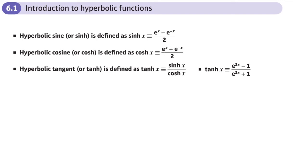This is the first section of chapter 6 in the Call 2 book on hyperbolic functions — an introduction to the hyperbolic functions. The hyperbolic functions are related to the normal functions for sine, cos, and tan. Some of the identities and rules that we have for sine, cos, and tan can also be used for these hyperbolic functions. We have hyperbolic function buttons on our calculators.